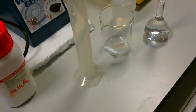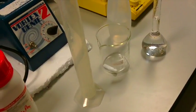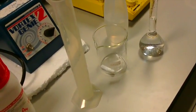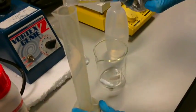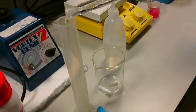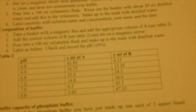For the final part of making up the second buffer, you are going to take the appropriate amount of solution A, adding to the appropriate amount of solution B. This is outlined in the table in your manual. For example, for pH 6, we are going to be adding 43.85 ml of solution A with 6.15 ml of solution B.